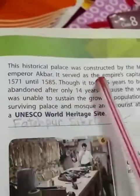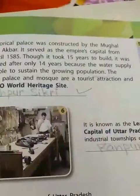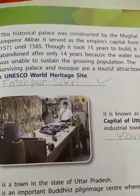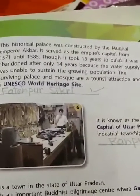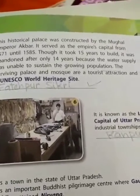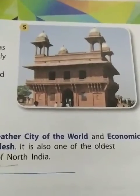The next historical place was constructed by the Mughal Emperor Akbar. It served as the empire's capital from 1571 until 1585, taking 15 years to build. It was abandoned after only 14 years due to inadequate water supply to sustain the growing population. It is a tourist attraction and a UNESCO World Heritage Site. It is Fatehpur Sikri.